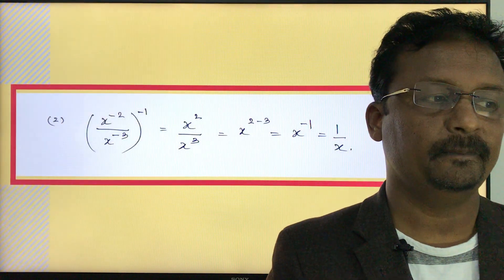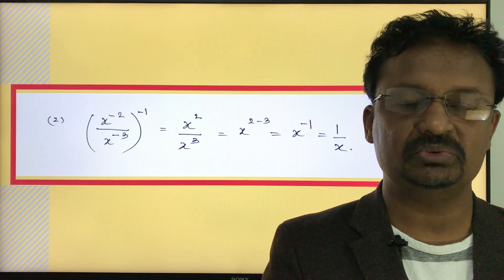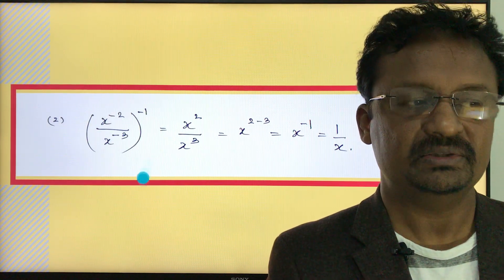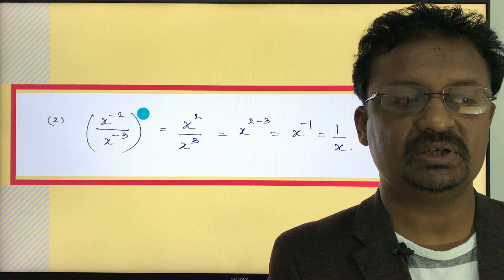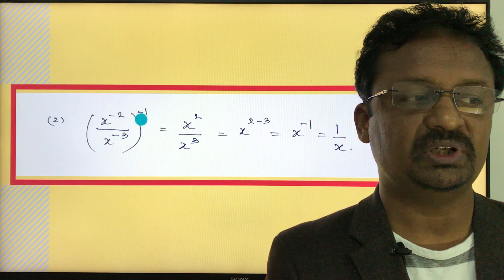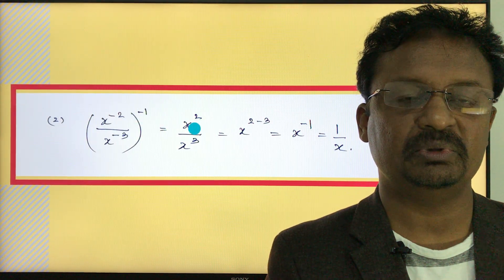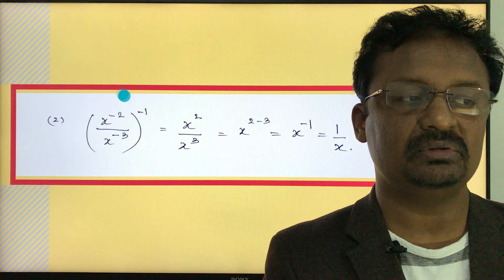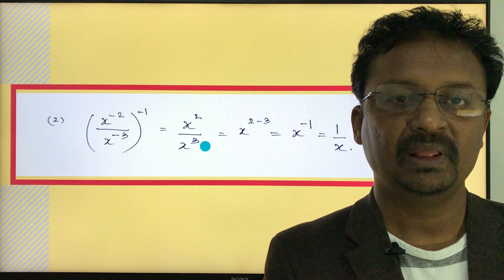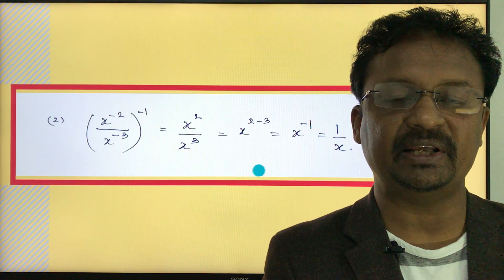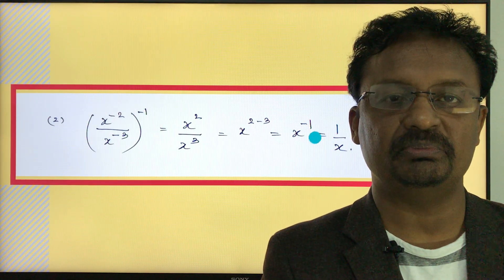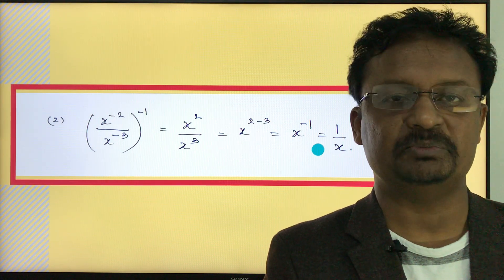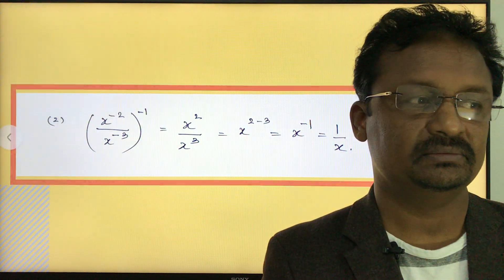The second example: x to the power of negative 2, divided by x to the power of negative 3, all raised to the power of negative 1. First apply the power rule: negative 2 times negative 1 equals positive 2, so the numerator becomes x to the power of 2. Then x to the power of negative 3, raised to the power of negative 1, becomes x to the power of positive 3. Applying the quotient rule: x to the power of 2 minus 3 equals x to the power of negative 1, which equals 1 over x.